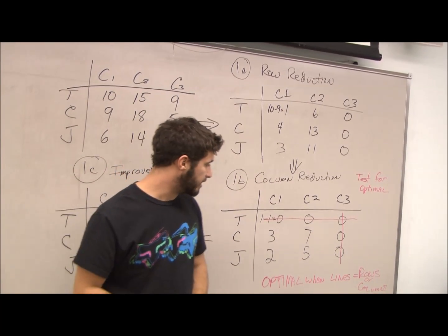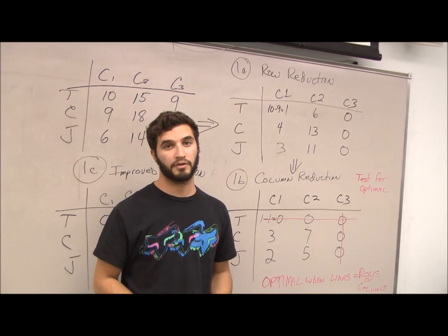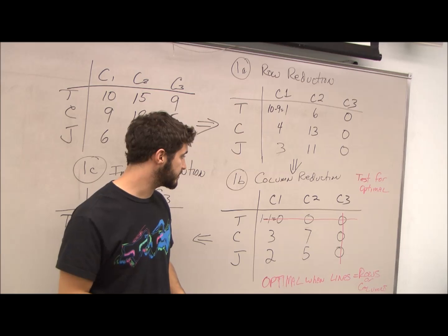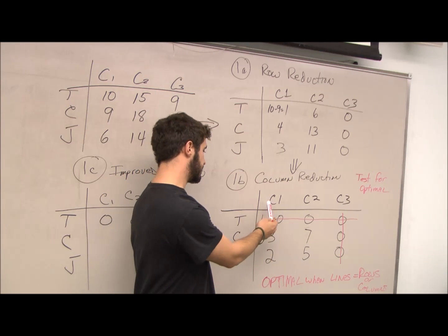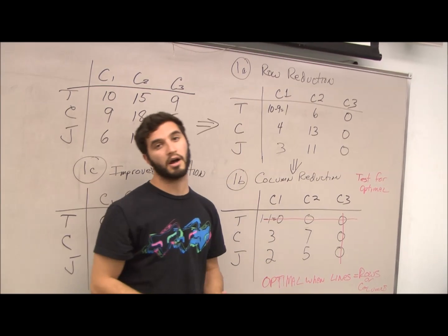To test for optimality, it's only optimal when the lines equal the amount of rows or the amount of columns. As you can see, there are three rows and three columns and only two lines, so this is not optimal.